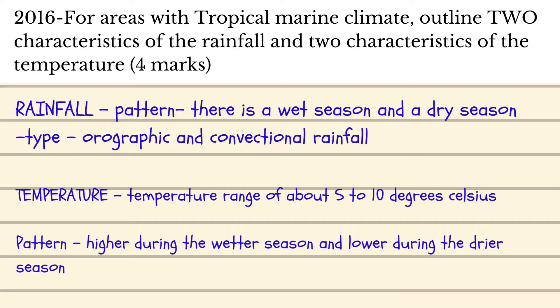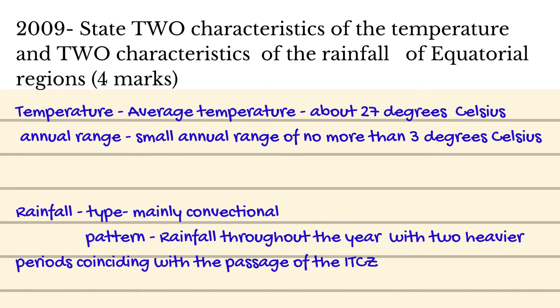Always bear in mind the marks. This next question says: state two characteristics of the temperature and two characteristics of the rainfall of equatorial regions. The first thing you need to do is think about the different characteristics you could talk about — and remember, you only need to talk about two for each factor.